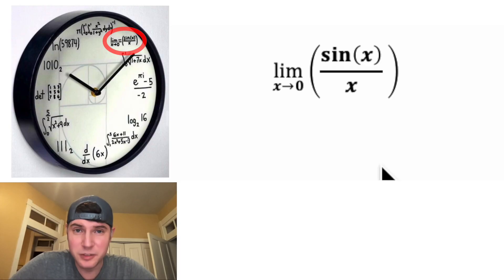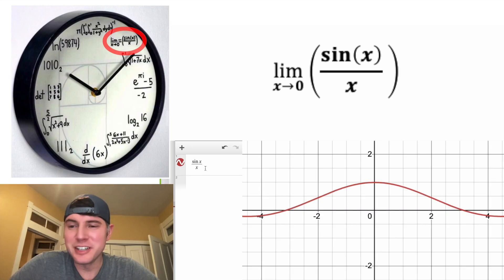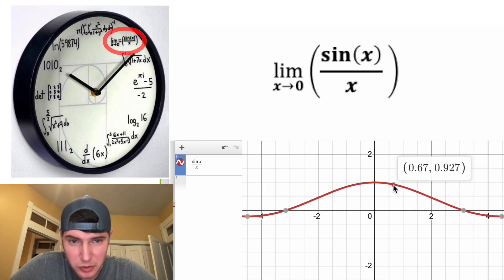The first one says the limit as x approaches zero of sine of x over x. So let's use Desmos right now, and I plugged in sine of x over x, and we want to know what is the y value of this graph as x approaches zero. So as we approach zero here, we can see that it's approaching one.